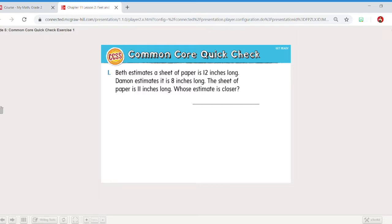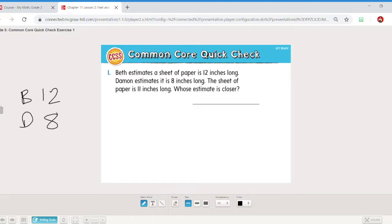Beth estimates a sheet of paper is 12 inches long. Damon estimates it is 8 inches long. The sheet of paper is 11 inches long. Whose estimate was closer? So remember estimate is another word for an educated guess. They're predicting. Beth I'm going to write 12. And Damon says 8. I'm going to put P for paper is actually 11. We want to know who is closer.